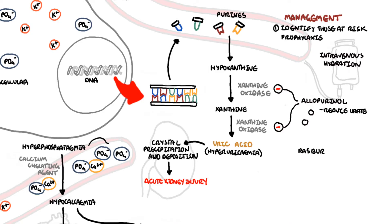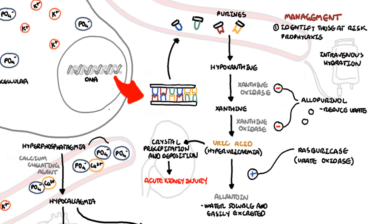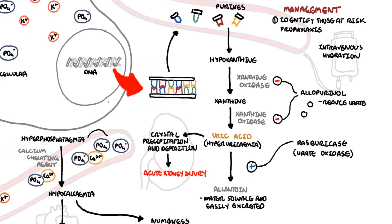In very high risk patients, rasburicase, a urate oxidase enzyme, can be used instead of allopurinol, again 48 hours before treatment and with intravenous hydration. Rasburicase is a uricolytic agent that catalyzes enzymatic oxidation of uric acid into allantoin, a water-soluble product more easily excreted by the kidney in the urine. Close monitoring of electrolytes and renal function is important throughout this whole process.